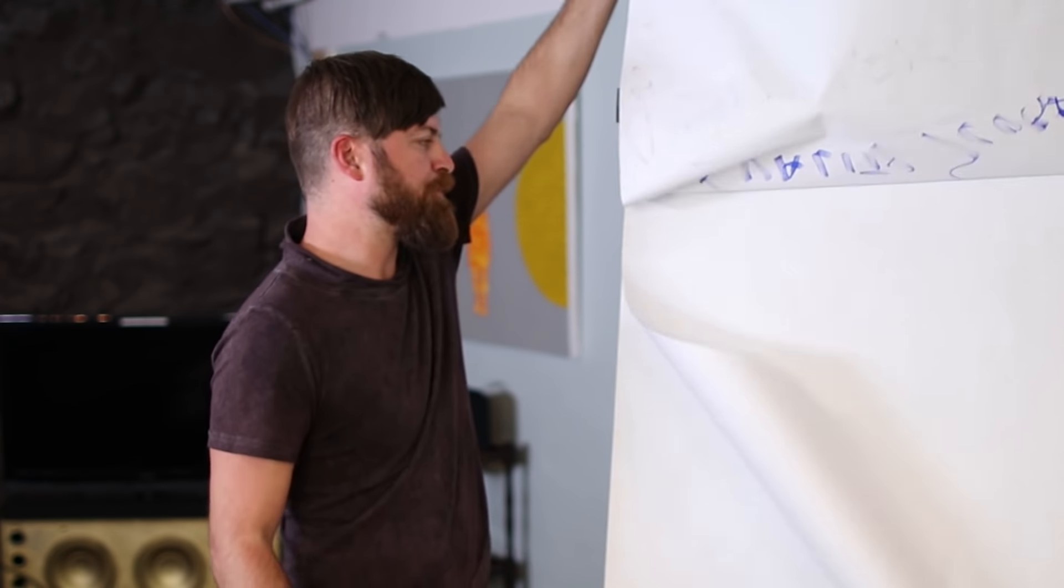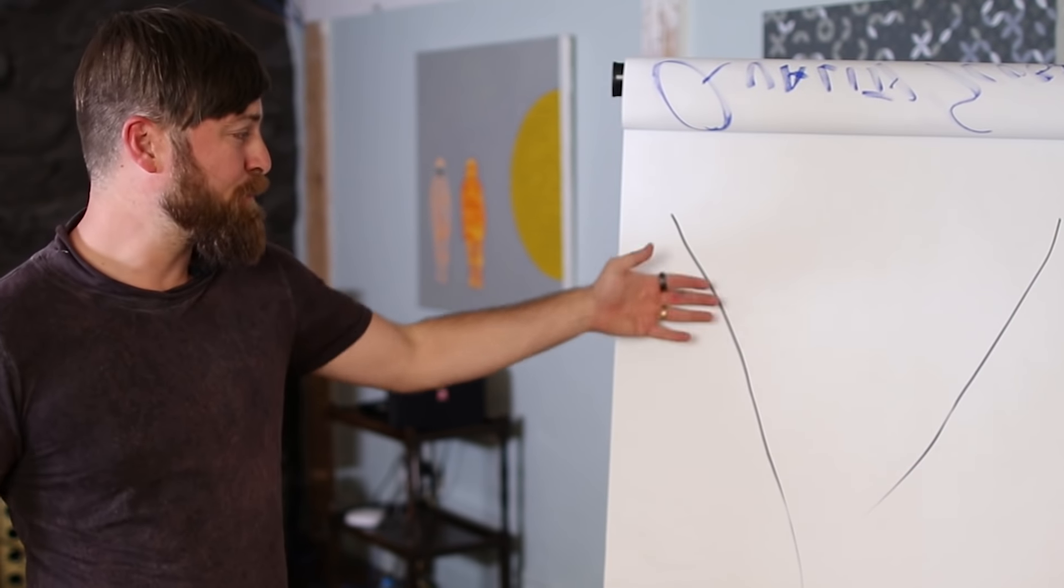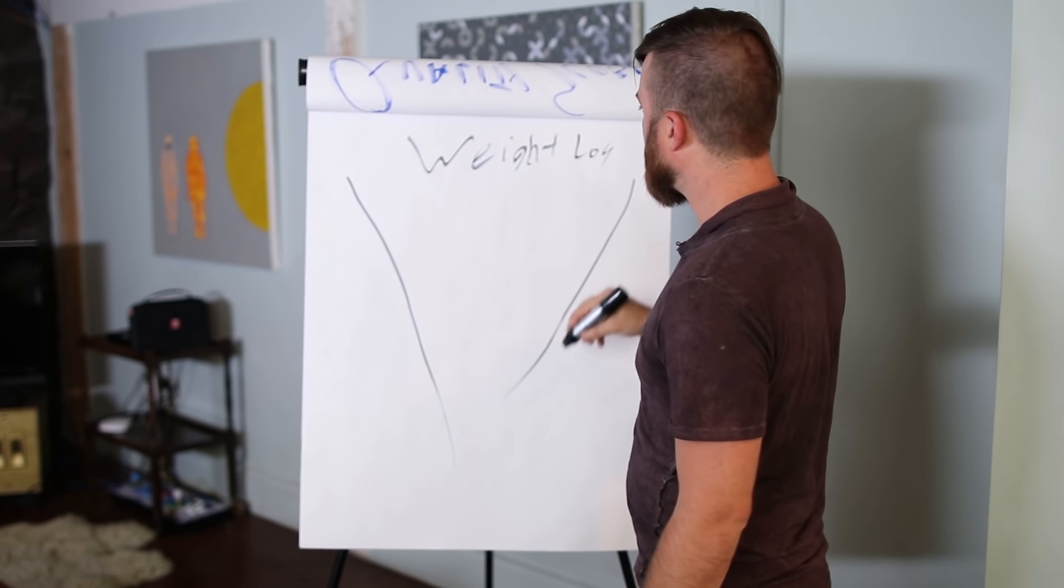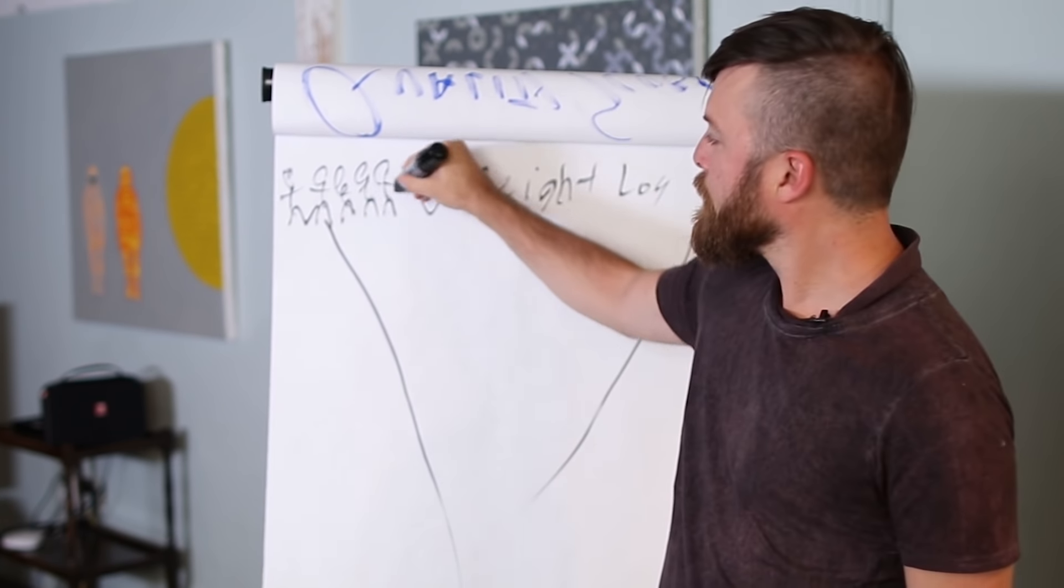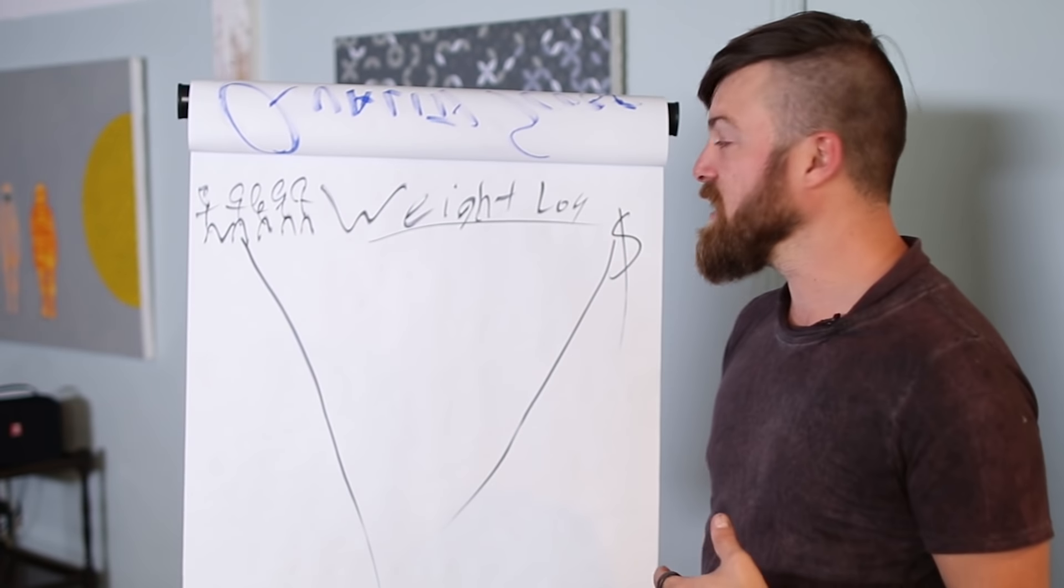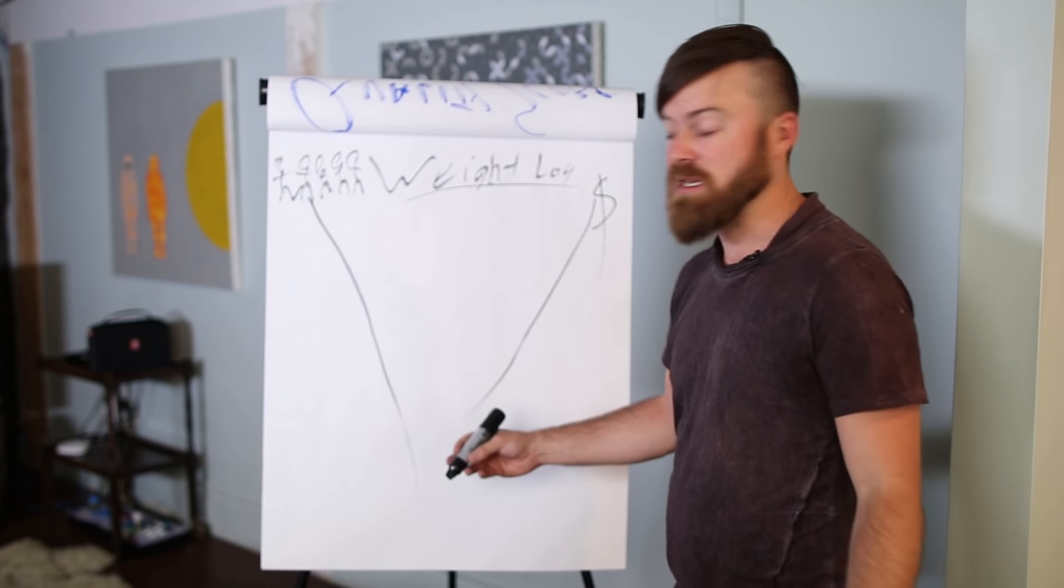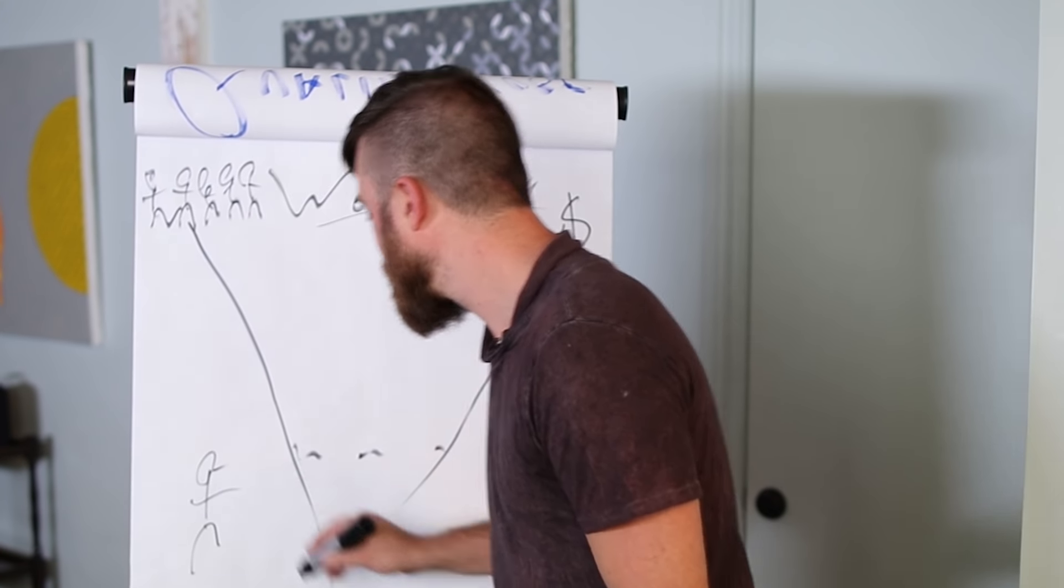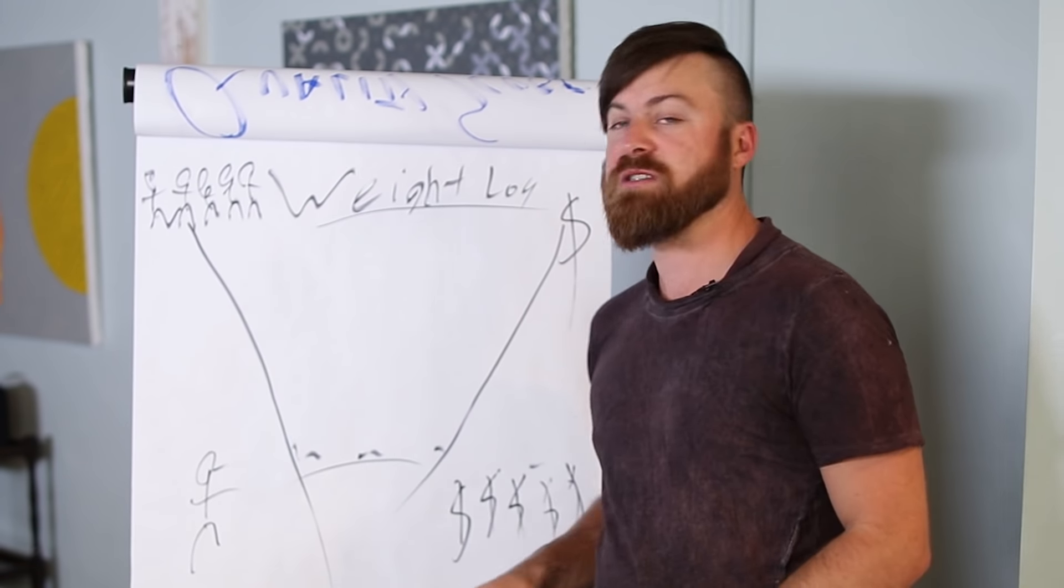To illustrate this point, I think of keyword intent as a funnel. Up here you might have words like 'weight loss,' and there's a lot of people searching for this keyword. But the money for this keyword is very low, and the intent to purchase is fairly low. You can increase your quality score by going after long-tail keywords where fewer people are searching, but the ROI and quality score will be much higher.